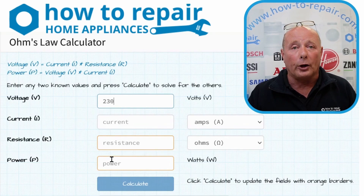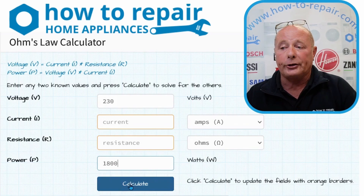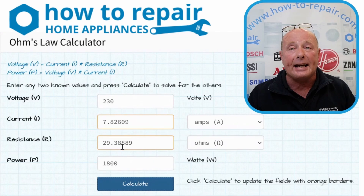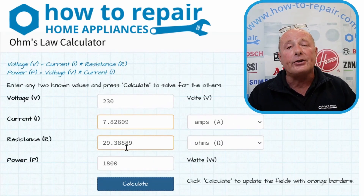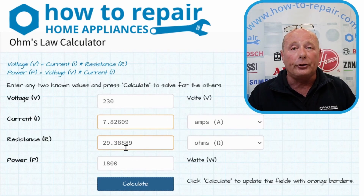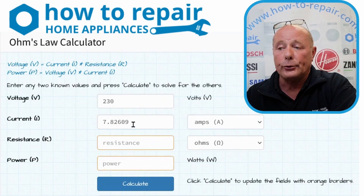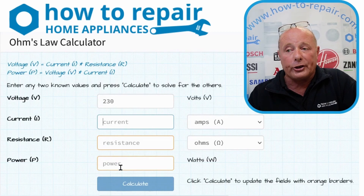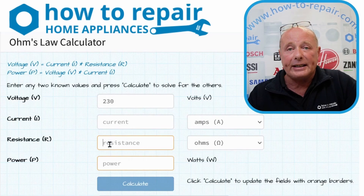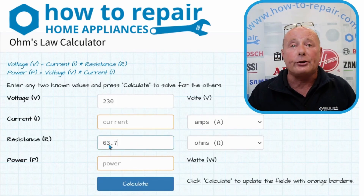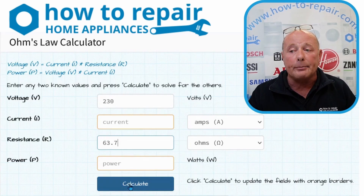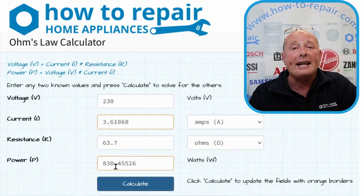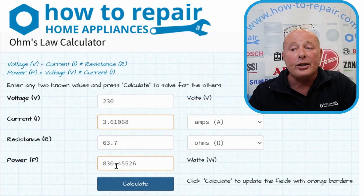We will be testing an 1800 watt element later. If we put in 1800 watts, we know that the Ohm's resistance should be 29.38 ohms on this element, allowing for a 10 to 15 percent margin of error on the multimeter and also the age of the element. The second way I use this is to work out the actual resistance to determine the wattage. When I tested the base element I had 63.7 ohms resistance but did not know the wattage at the time. The calculator tells me I should be looking for 830 watts — and the element was actually 850 watts, which is within that 10 to 15 percent margin.